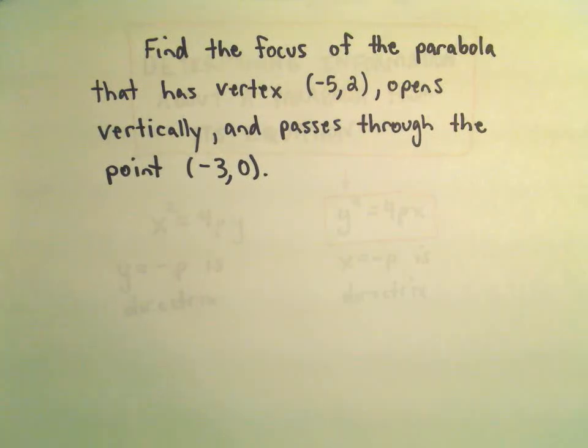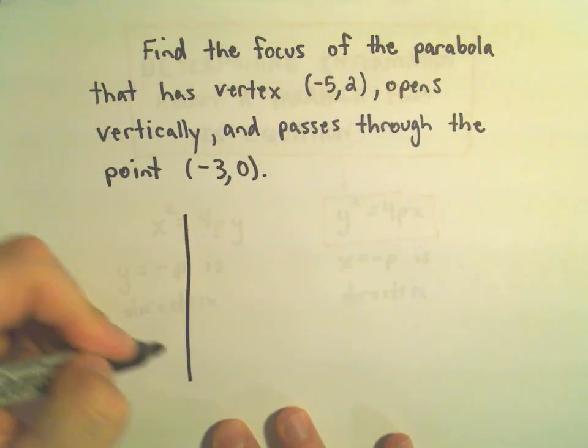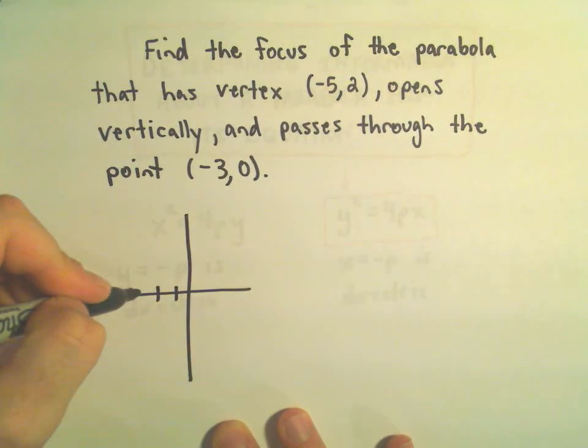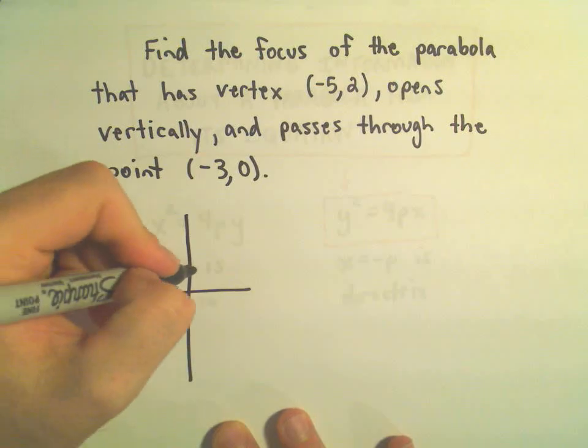So we want to find the focus of the parabola that has vertex at (-5, 2).